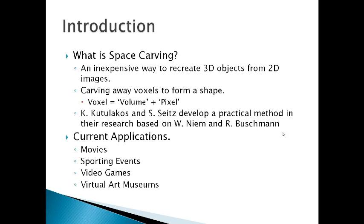So what we do is we carve away voxels to form a shape. What is a voxel? It's a combination of volume and pixel. So it's a block, a rectangular prism in space that you define, and it gives depth to any particular prism. Cutelacus and Seitz were some people to develop a practical method in their research, and their research was based on W. Neem and R. Buschmann from Hamburg, Germany.